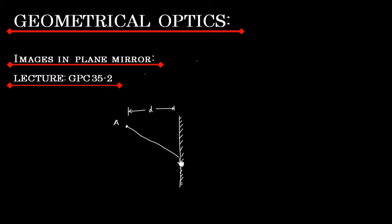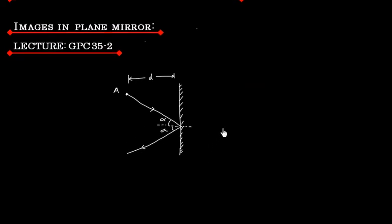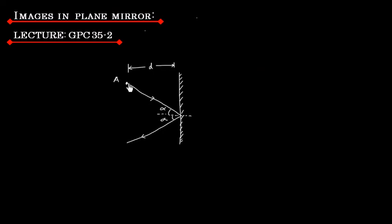Now if we consider two rays incident on this plane mirror from object A — one ray is incident at some angle alpha with the normal. The law of reflection says this ray will be reflected at an angle of alpha. If we consider another ray that is perpendicular to this plane, it will be reflected back in the same direction.